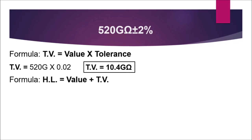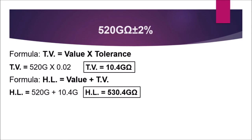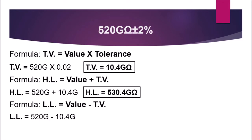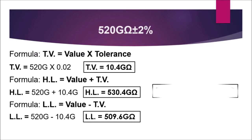This 10.4 giga-ohms will be added and subtracted from 520G to get the range. The higher limit is: value plus tolerance value, so 520 giga plus 10.4 giga gives us 530.4 giga-ohms. The lower limit is: value minus tolerance value, so 520 giga minus 10.4 giga gives us 509.6 giga-ohms.